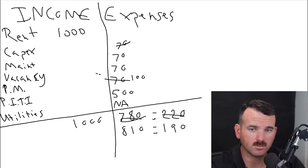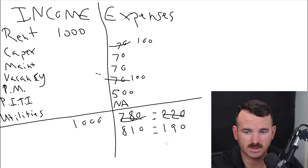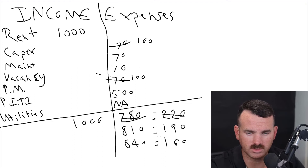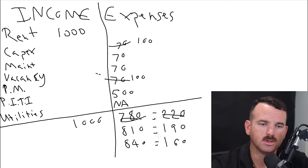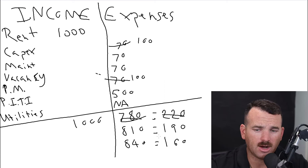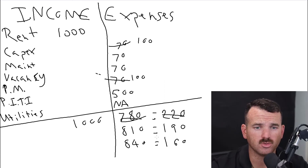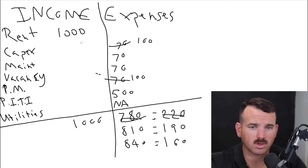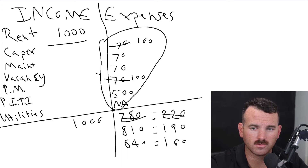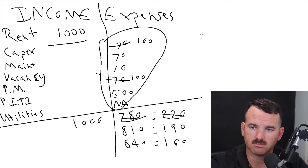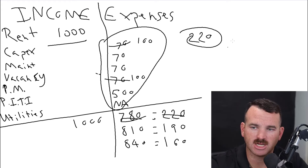You can play with these numbers. CapEx — if it's an older house, you might need to replace a lot more, so you might want to budget 10% for that as well, which brings you down to around $160. Understand how the math works and understand what those basic things are. So if we know rent is $1,000 and we subtract all expenses, we get $220 — that's our cash flow.